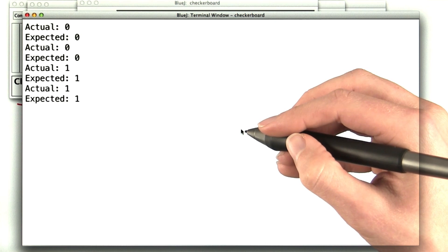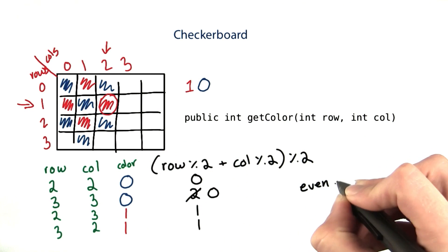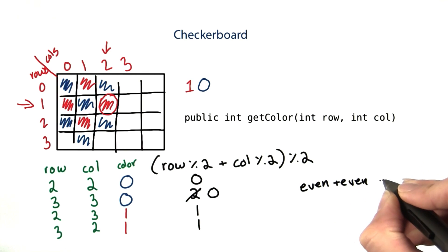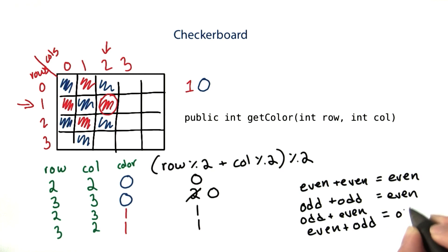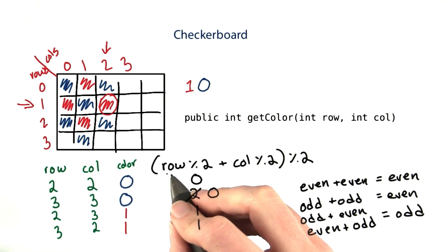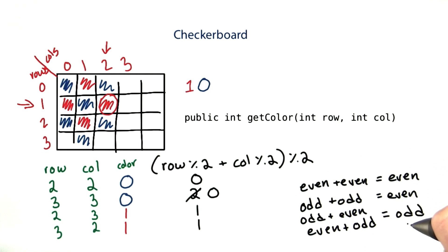But could we make this any simpler? What if I noticed that adding an even number plus an even number gives me another even number, and an odd number plus an odd number gives me another even number. But odd plus even, or even plus odd, both give odd numbers. Then I could just add row and column and take the mod 2 right at the end. Because if they match, their sum is even. And if they don't match, the sum is odd.